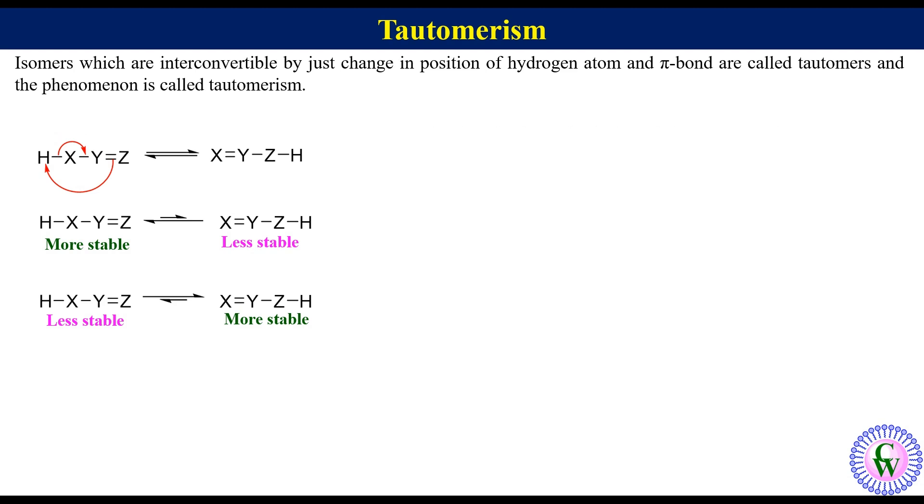Imine-enamine tautomerism. Imine is a compound formed by the reaction between a primary amine and an aldehyde or ketone. It has a double bond between nitrogen and carbon. Relocation of alpha hydrogen from carbon to nitrogen gives tautomer enamine. In general, imine is more stable than enamine.